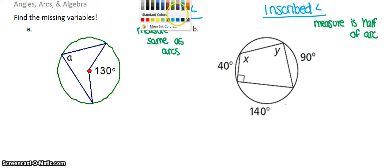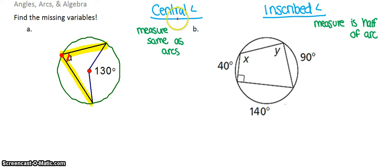Looking at letter A, you want to find the measure of angle A. First, identify what type of angle it is. A central angle has its vertex at the center, and an inscribed angle has its vertex on the edge of the circle. This angle is an inscribed angle because its vertex is not at the center — it's at the edge.